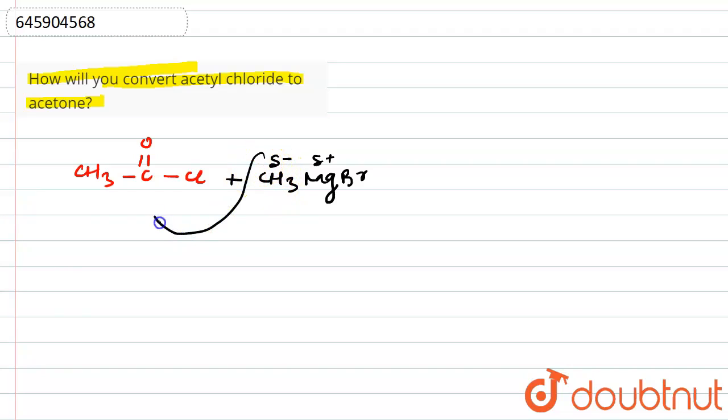This nucleophile will attack on the carbonyl group, and the pi bond will shift in the upward direction. It will convert into CH3-C with oxygen negative charge, utilized by MgBr positive, with chlorine and CH3 attached.